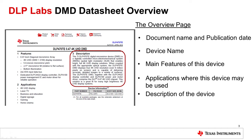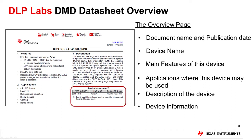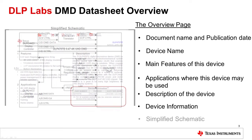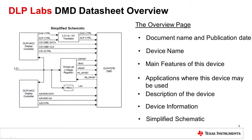The device information table in section 3 shows the part number, package description, and size of the DMD. Also included on the first page of a DMD datasheet, you will typically find a simplified schematic that shows the devices that comprise the DLP chipset.